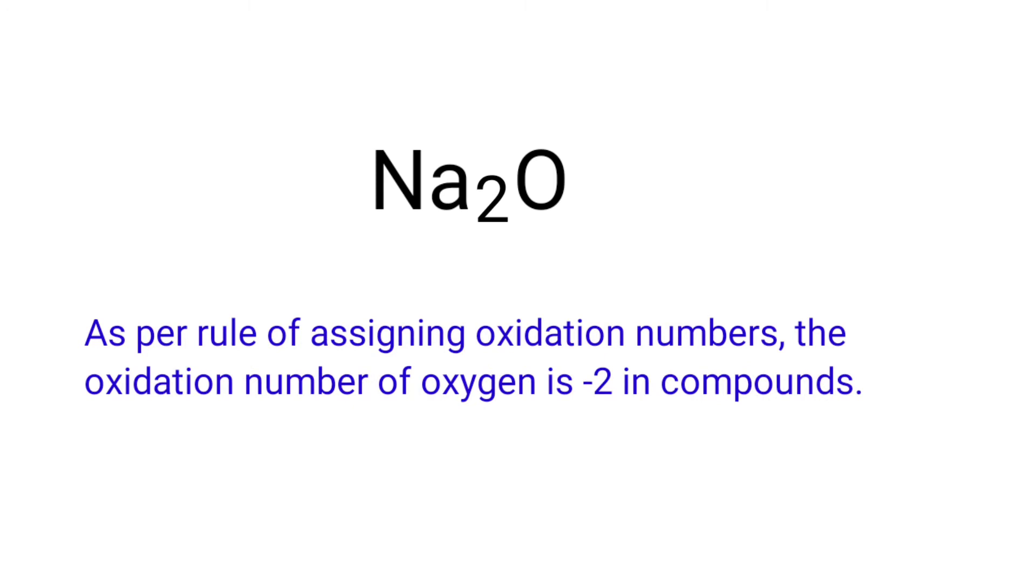As per rule of assigning oxidation numbers, the oxidation number of oxygen is minus two in compounds. We can write the oxidation number of the element above its symbol and the total number of the oxidation number of the atoms below its symbol.